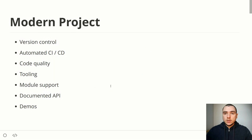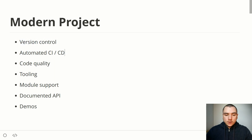Before we get into coding, let's talk about the qualities of a successful modern project. One characteristic would definitely be version control, using something like Git with GitHub, Bitbucket, or GitLab. A project will often also have an automated CI/CD pipeline, meaning releases and deployments are automated. There will also be a heavy focus on code quality, which brings us to the tooling section.